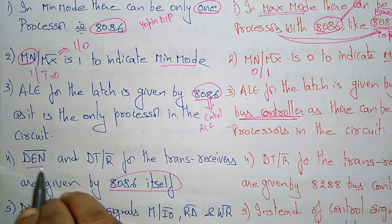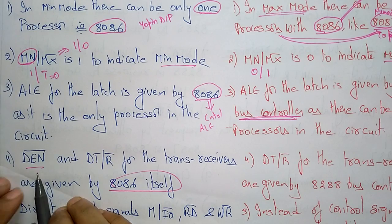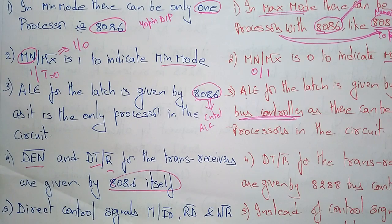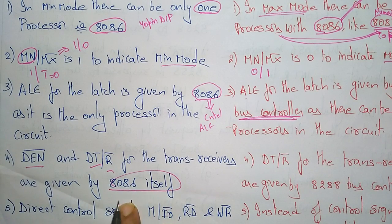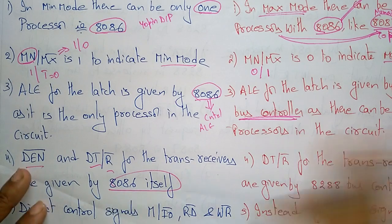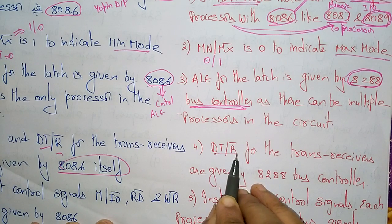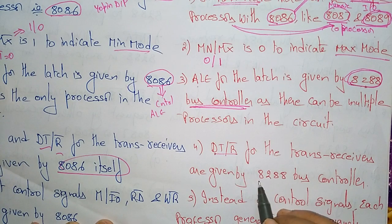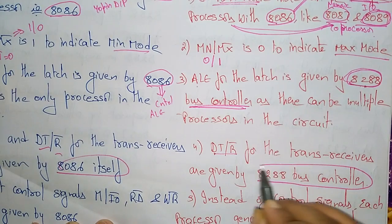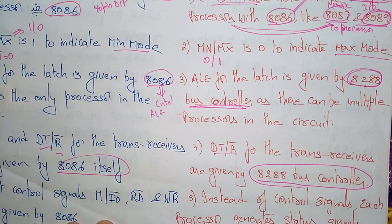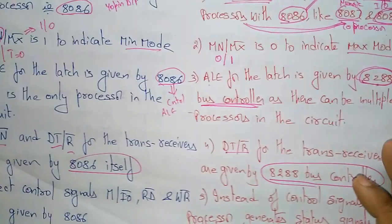The DEN — Data Enable — and DT/R bar — Data Transmitter/Receiver — signals for transceivers are given by the 8086 itself in minimum mode. Everything, whether to enable data, transmit or receive, read or write, is handled by the 8086. Whereas in maximum mode, the DT/R bar — transmitter or receiver selection — is provided by the bus controller 8288, which signals whether to read or write the data.